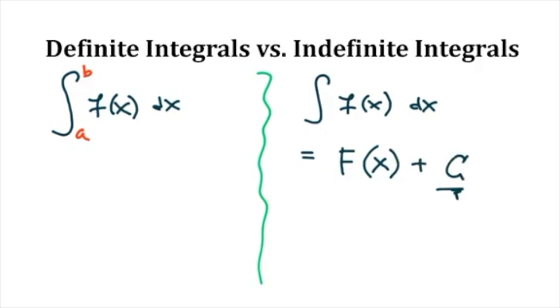Really it's a family of functions because of this constant of integration. That's because deriving a constant to check our work is zero, so there are really an infinite number of antiderivatives that satisfy the indefinite integral because of that constant c.